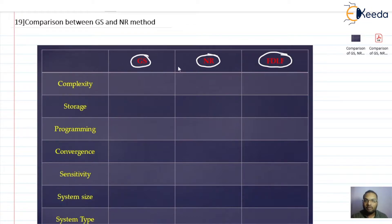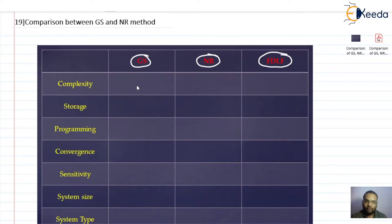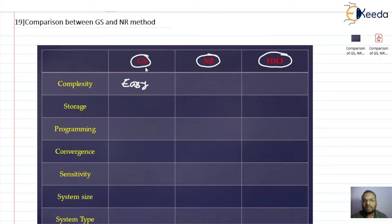Let us begin with the complexity of the method. The Gauss-Seidel method involves very simple equations — two equations, one for real power in terms of phase angle and voltage, and one for reactive power in terms of phase angle and voltage, solved iteratively. So complexity-wise, the Gauss-Seidel method is an easy method involving very little and simple mathematical computation.